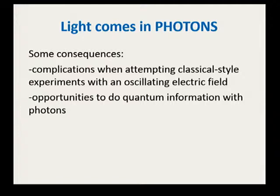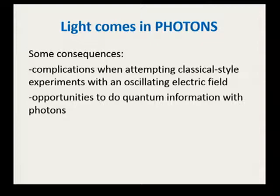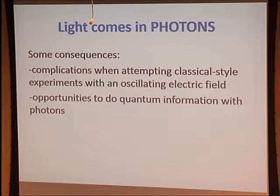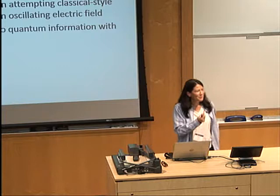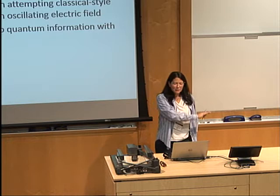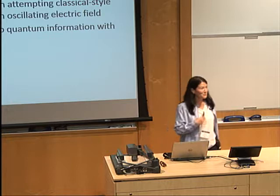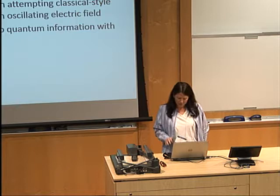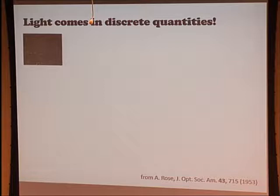I want to talk about two main consequences of that. One, a set of complications that occur when you're trying to do experiments that might be inherently classical style experiments — where you have an oscillating electric field and you'd like to measure something about the way it oscillates, maybe in an interferometer or interacting with matter — and what you have to think about more carefully because light is quantized. And secondly, a set of opportunities that come along with the fact that light comes in photons, which are quantum mechanical particles, and what we might be able to do exploiting that for, for instance, quantum information. So light comes in discrete quantities — packets — indivisible packets of a certain amount of energy.